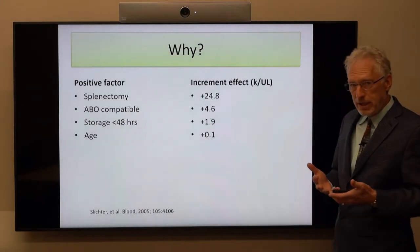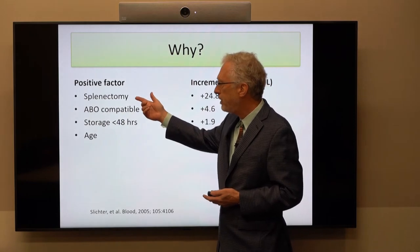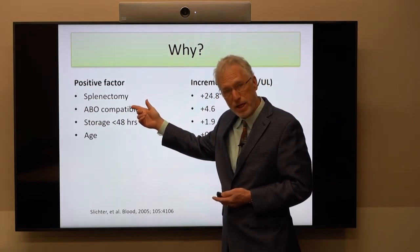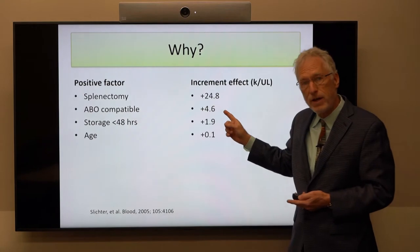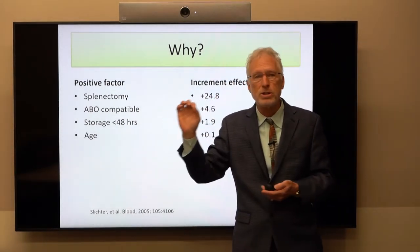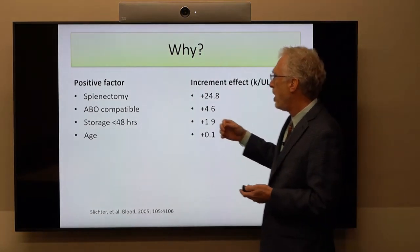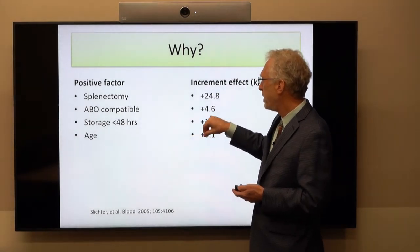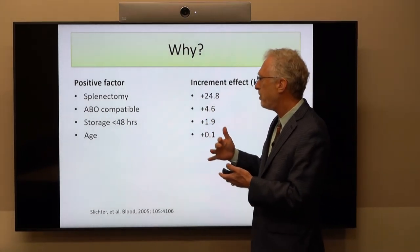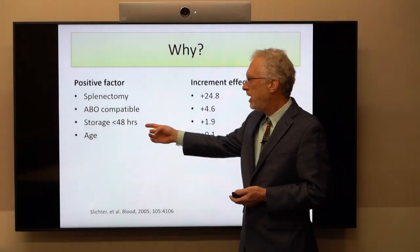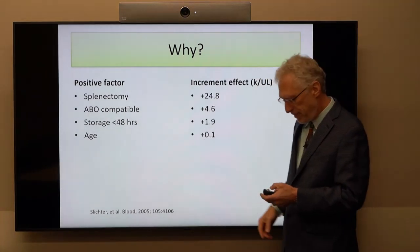There are also positive factors influencing response. Splenectomy has a huge impact: almost 25,000 per microliter improvement in expected increment — telling us the spleen plays a major role in refractoriness. ABO compatibility adds almost 5,000 per microliter. Platelets stored less than 48 hours do slightly better, about 2,000 per microliter. And there is a small positive effect from the age of the recipient.